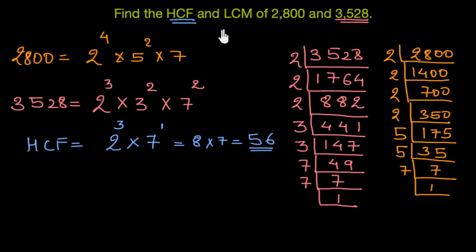Now, let's try finding the LCM. So LCM, in LCM, we have to pick all available prime factors with their highest available powers. In this case, the available prime factors are 2, 3, 5, and 7. And we need to pick them with their highest powers available. In case of 2, it is 4. In case of 3, it is 2. In case of 5, it is again 2. Though 5 is just available in 2,800.